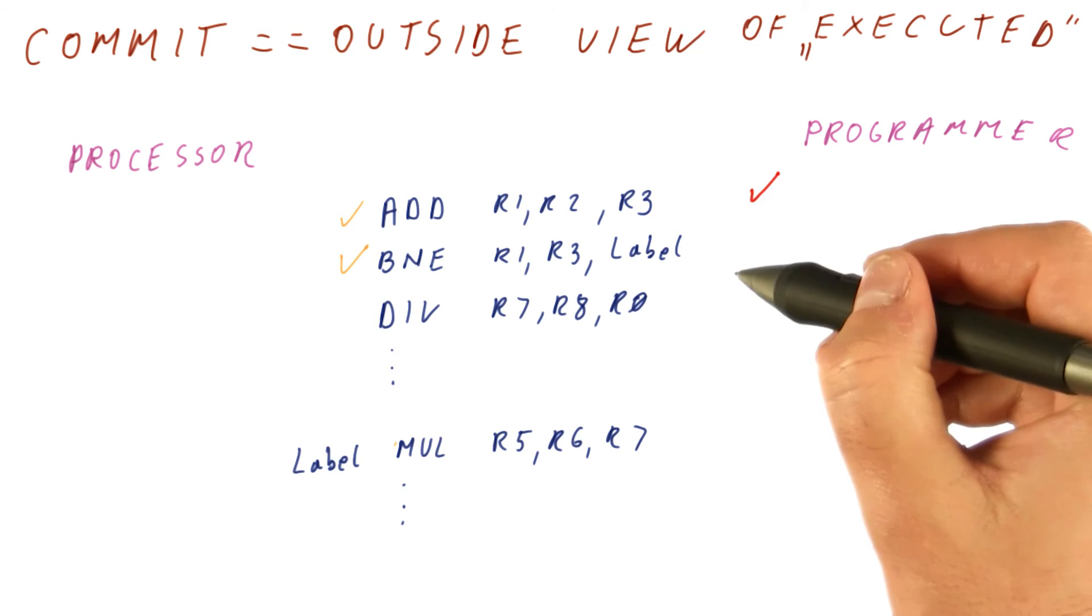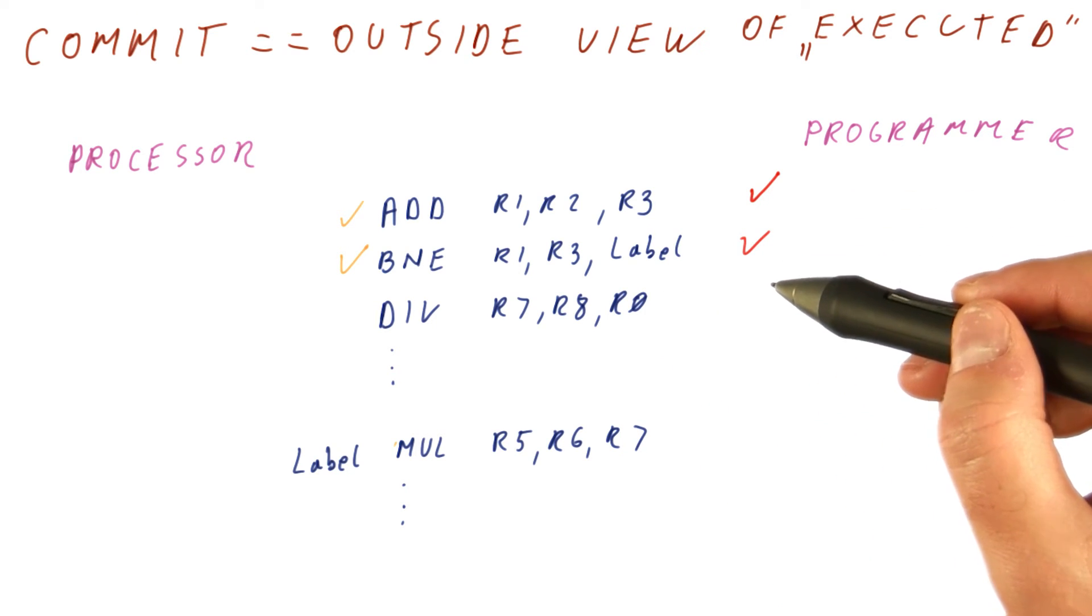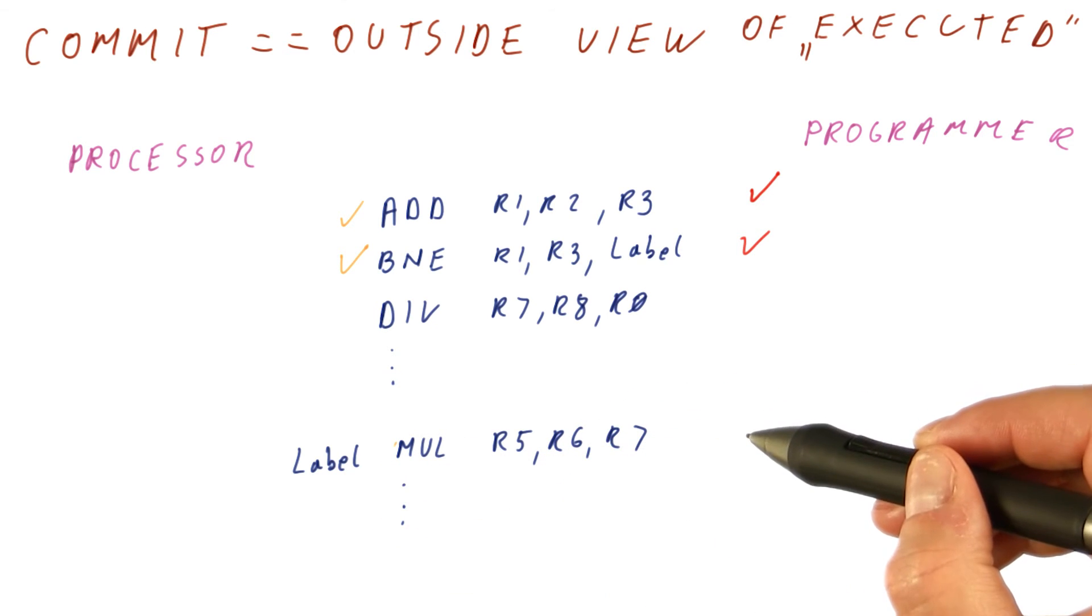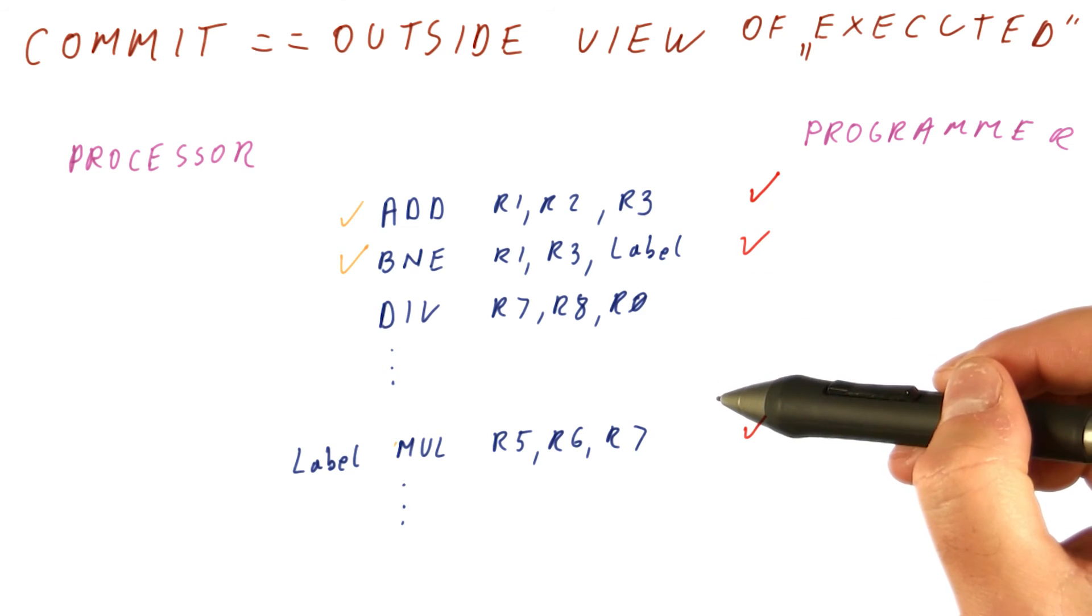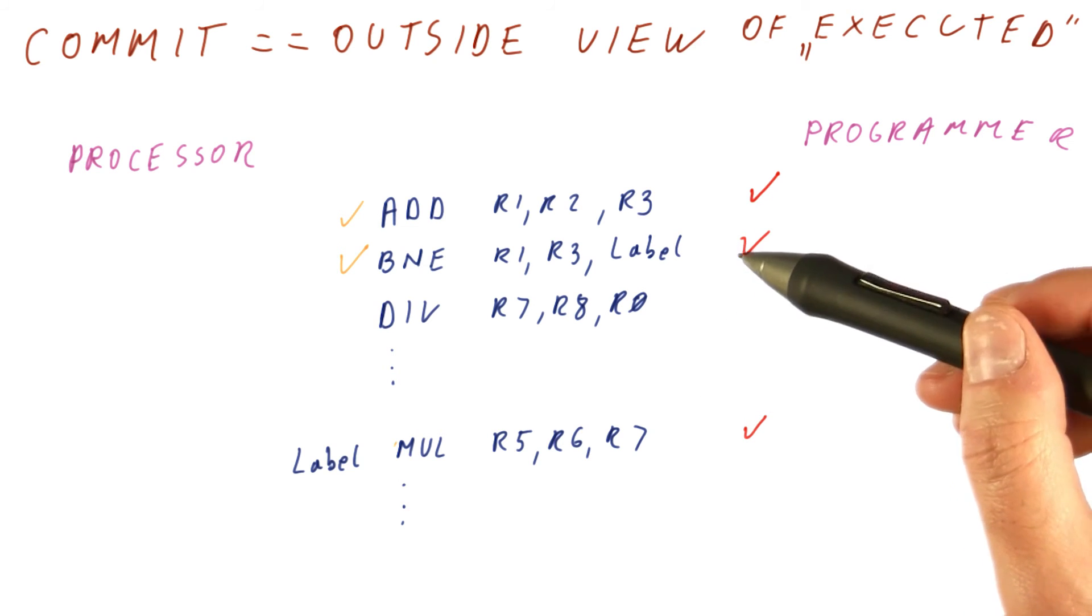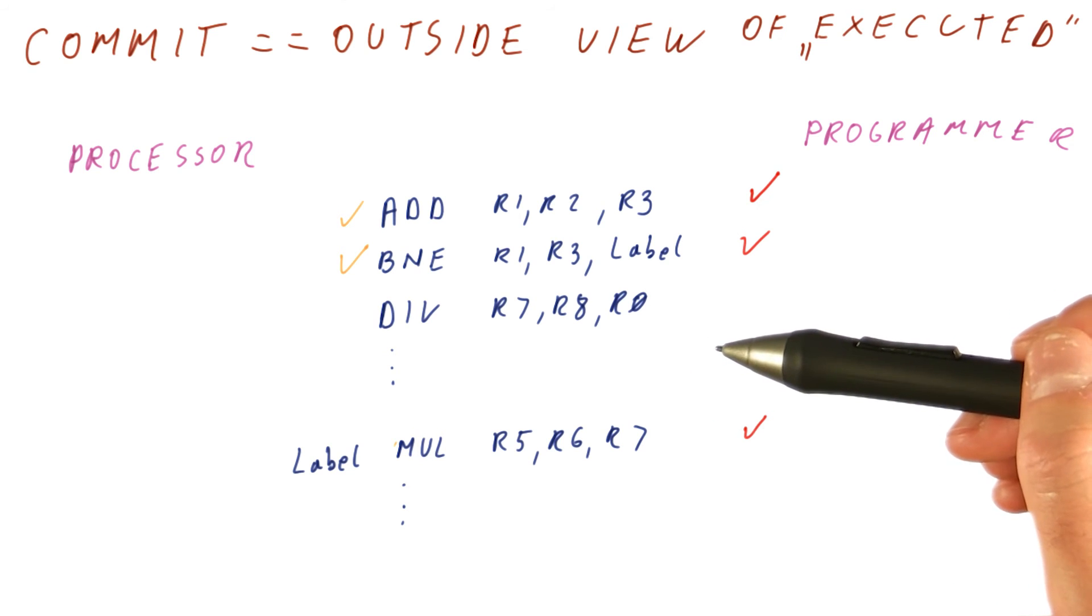We remove it from the ROB so the programmer will finally see the branch execute. But after that, the processor will start fetching from here. So the next thing the programmer sees is this. So the programmer never really sees execution of any wrong path instructions. And on exceptions, the programmer never sees any instructions other than those that should have been executed.